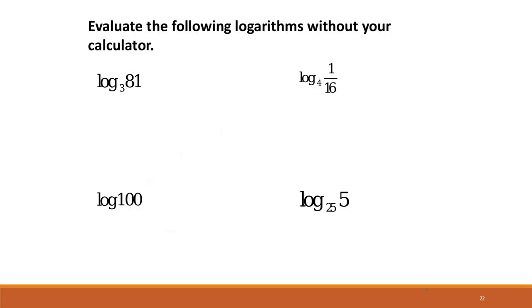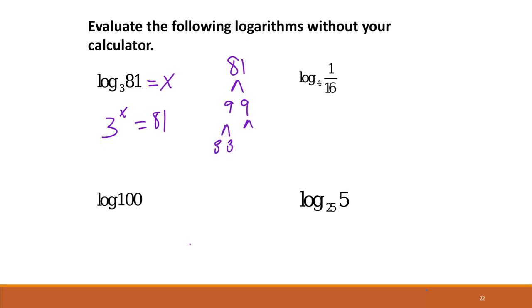To evaluate log base 3 of 81, we set it equal to x and write 3 to the x equals 81. Using a factor tree: 9 times 9 gives 81, and 3 times 3 gives 9, so we have four 3s. Therefore 3 to the x equals 3 to the 4th, and these cancel out leaving x equals 4.